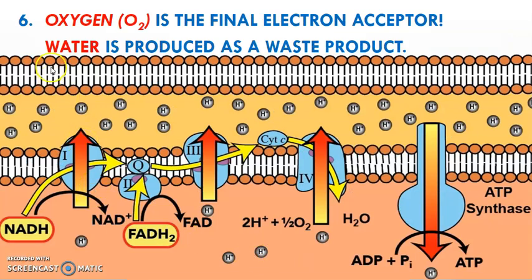Oxygen is going to serve as the final electron acceptor in this process. When oxygen accepts the electrons, it'll also bind to some hydrogens and become water. Water is the waste product of this reaction. Remember, water was a reactant for photosynthesis — now it is a waste product for cellular respiration.